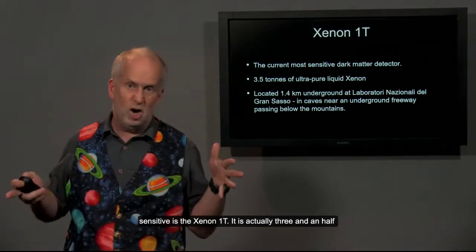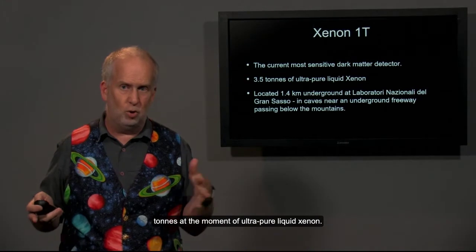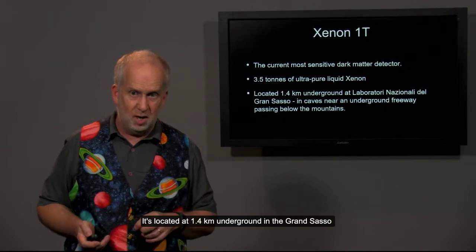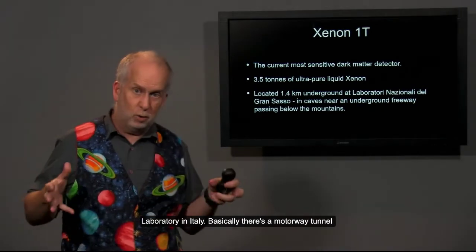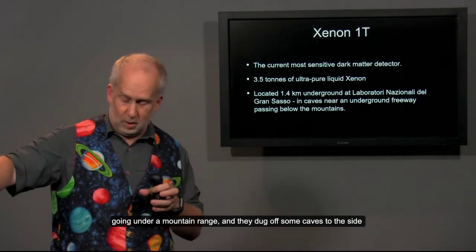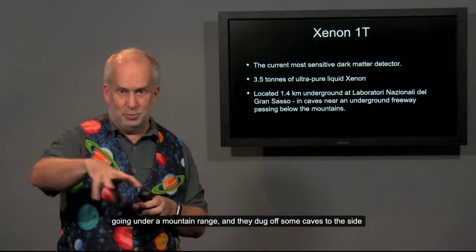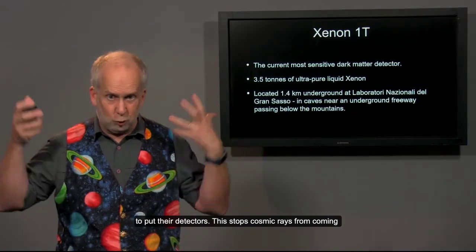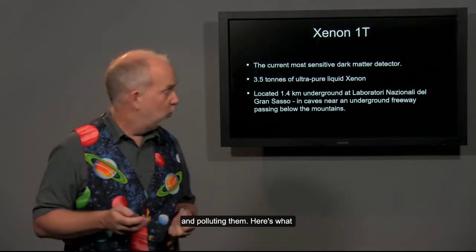The current most sensitive is the Xenon 1T. It's actually three and a half tons at the moment of ultra-pure liquid xenon, located 1.4 kilometers underground in the Gran Sasso Laboratory in Italy. Basically, there's a motorway tunnel going under a mountain range, and they dug off some caves to the side to put their detectors. This stops cosmic rays from coming in and polluting them.